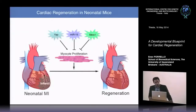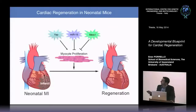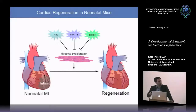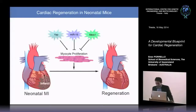To summarize: the neonatal mouse heart regenerates following multiple forms of cardiac injury via cardiomyocyte proliferation activation. We've identified several signaling pathways regulating myocyte proliferative capacity in the neonatal period, including the Hippo signaling pathway, microRNAs including members of the miR-15 family, and the transcription factor Meis1.